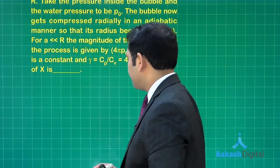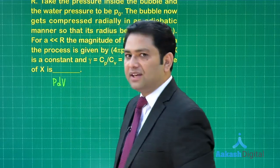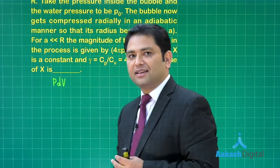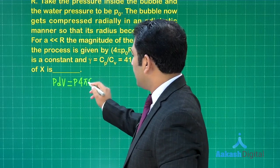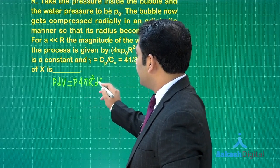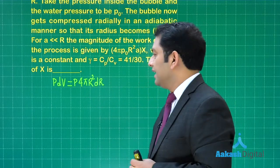This is an elementary work done. How much will be the expression? pdV, the elementary work done, and how much will be dV? 4πr² multiplied by dr, that is what the elementary work done is.